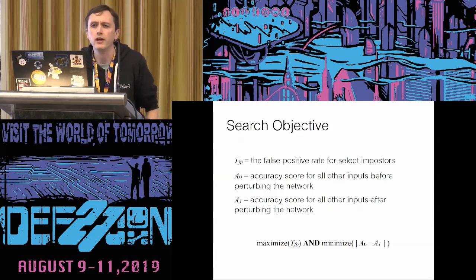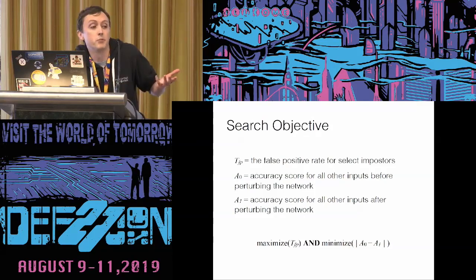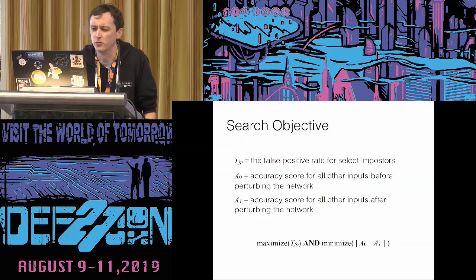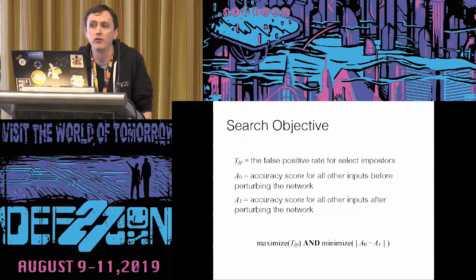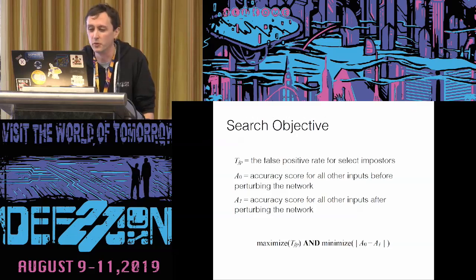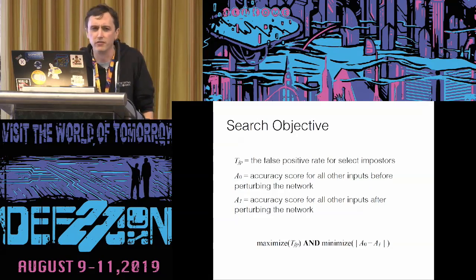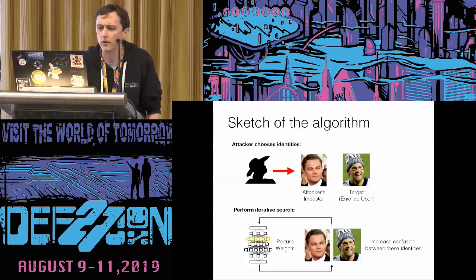Our objective function is really simple: we want to maximize T sub FP — because we want the backdoor to be reliable for the attacker that put it there — and we want to minimize the change in accuracy of this network after modifications. If we change it too drastically, the attack would probably be pretty detectable. If Tom Brady can no longer verify his identity, this is a denial of service on the legitimate user. Similarly, if the system has an overall false positive rate which is extremely high and anybody can access the locker, the security is gone completely and somebody's going to notice. So this is a very targeted objective meant just to improve the false positive rate of the attacker.